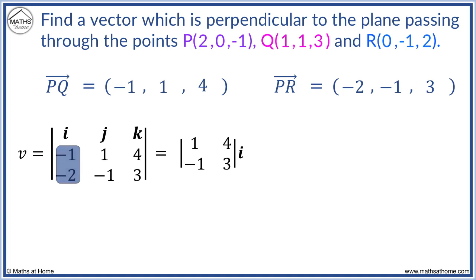We now have a subtraction. It is always a subtraction for the j component. We cover the j column to obtain -1, 4, -2, and 3.